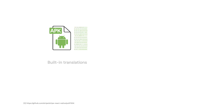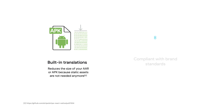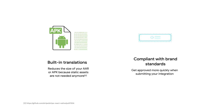We have seen this context drive consistent conversion improvements and an increase in the number of users using Google Pay. By using the Dynamic Button, you can reduce the size of your APK or AAR because you no longer need static assets for different languages. Additionally, you are getting approved more quickly when submitting your Google Pay integration through our Pay and Wallet console, as all the branding guidelines are automatically passed.